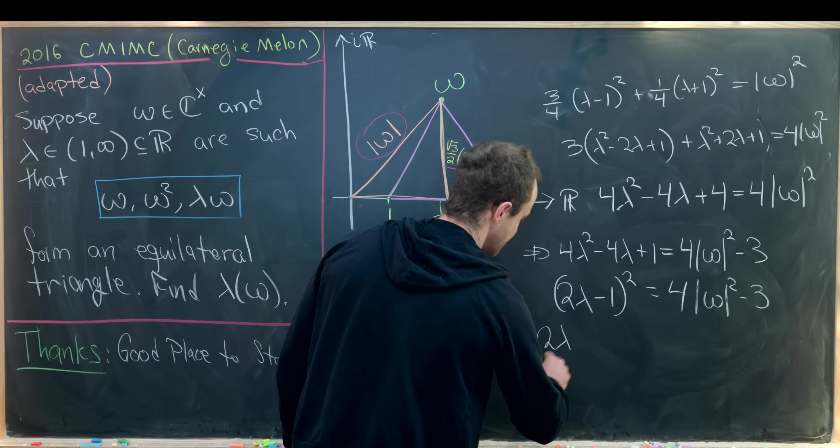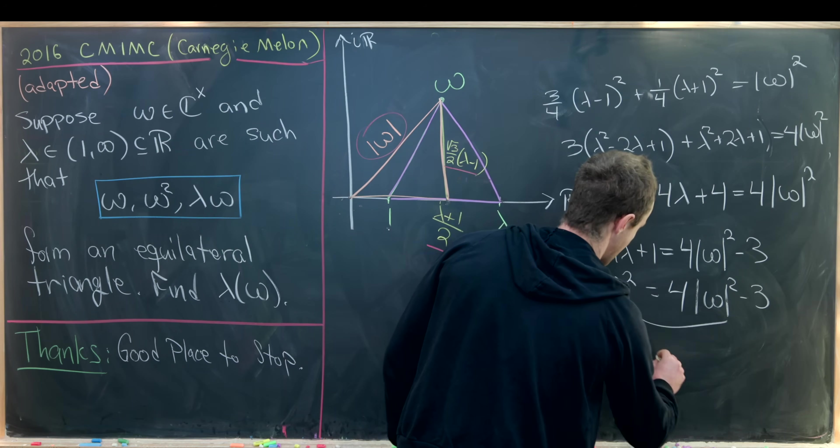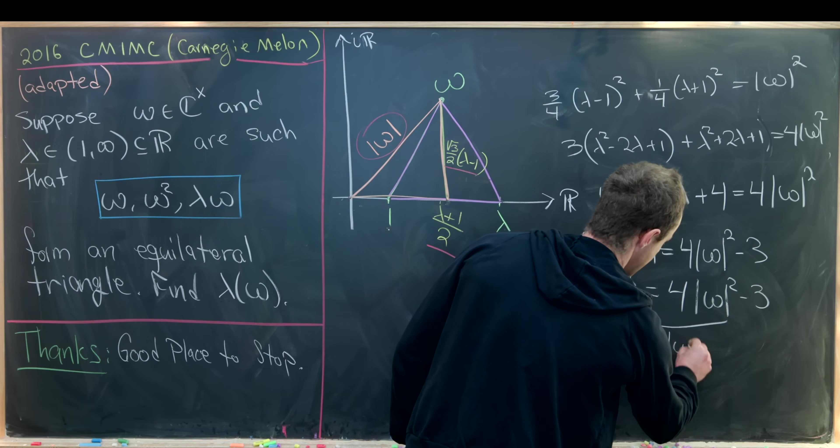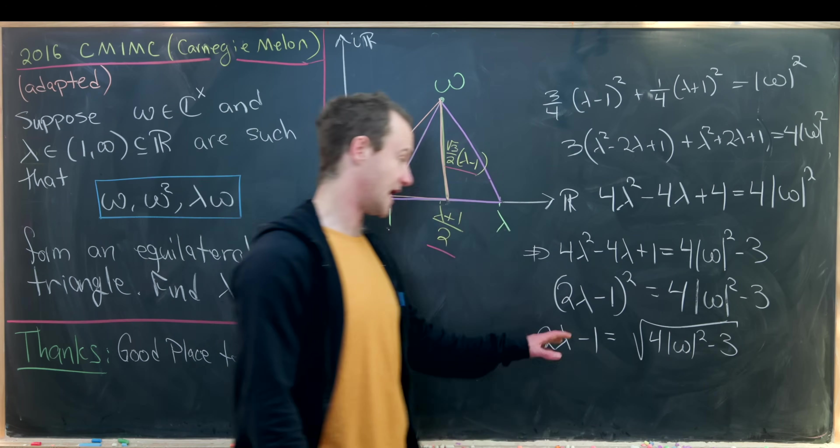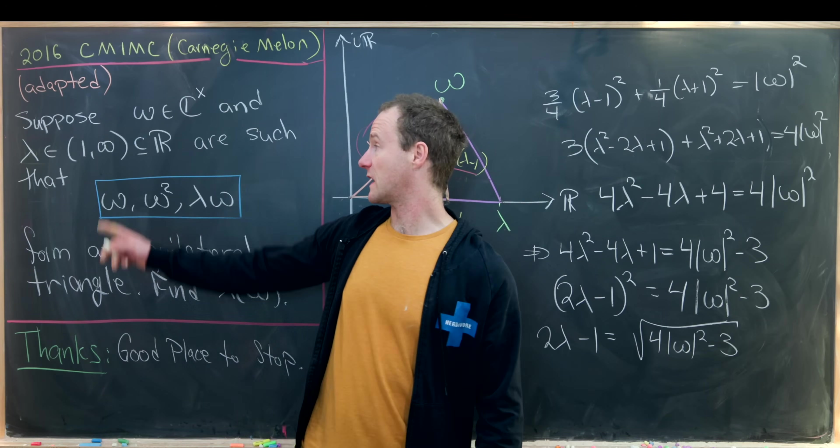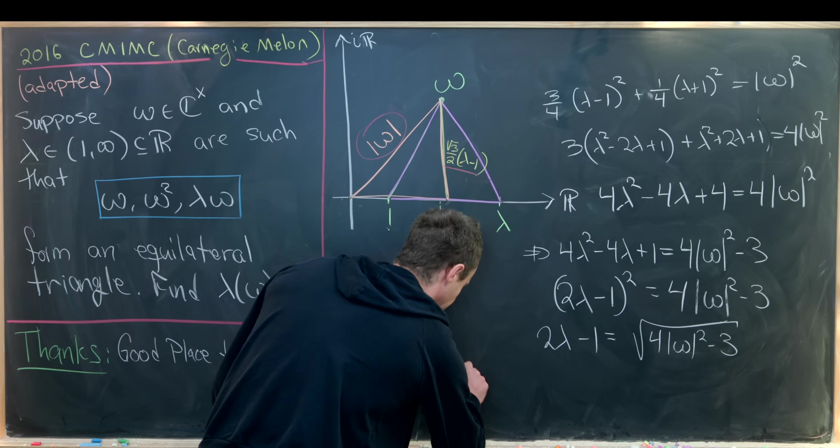Then this factors like 2 lambda minus 1 quantity squared equals 4 times omega squared minus 3. We can take the square root of both sides. We have 2 lambda minus 1 equals the square root of 4 times omega squared minus 3. Here we'll take the positive square root. Given that we want lambda to be positive and bigger than 1, and now we're pretty much home free.